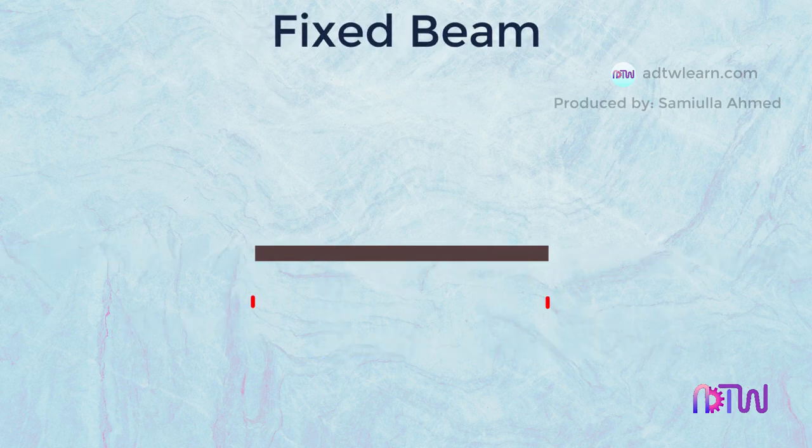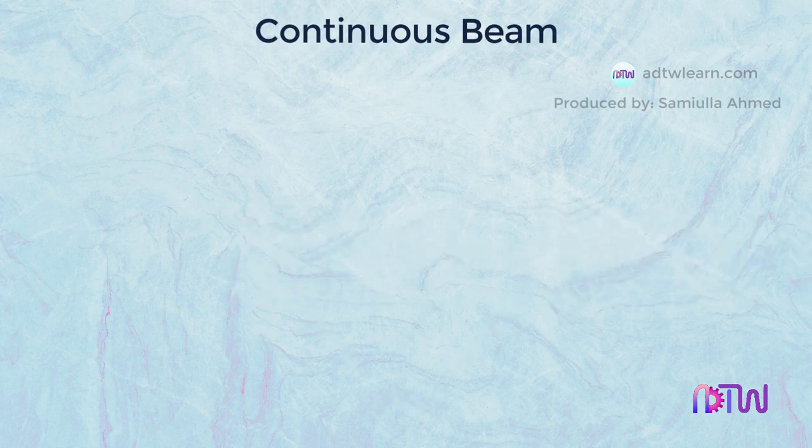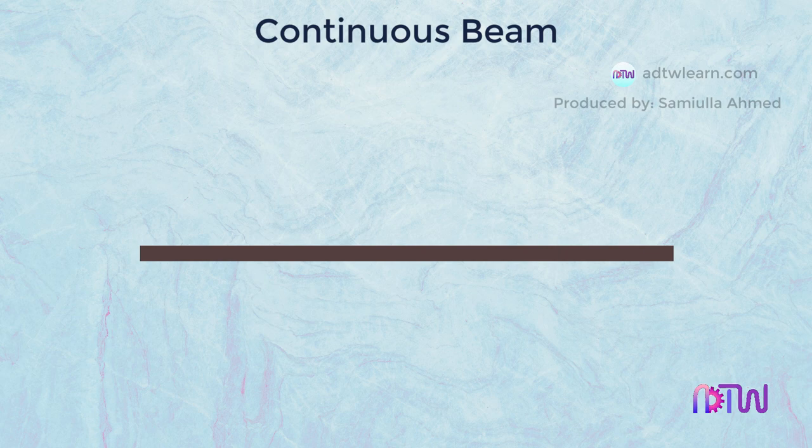Fixed Beam. This beam is fixed on its both ends. Continuous Beam. This beam is also a simply supported beam, the only difference is that it has more than two supports.